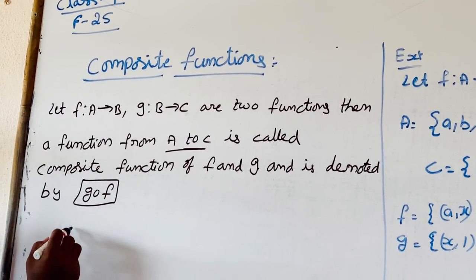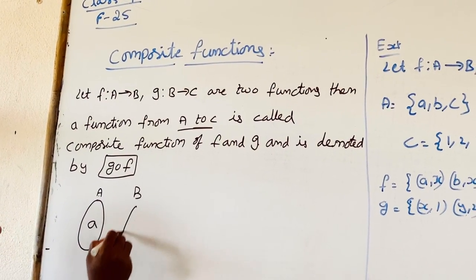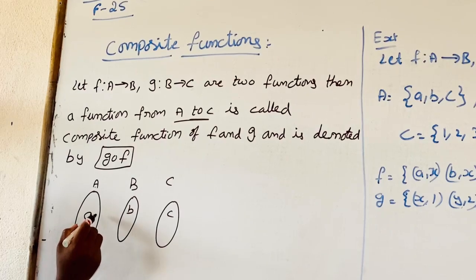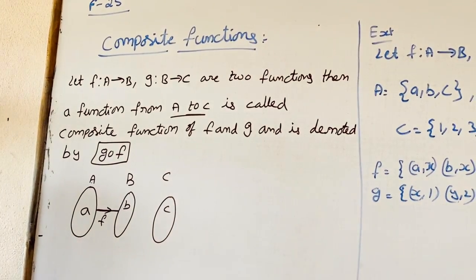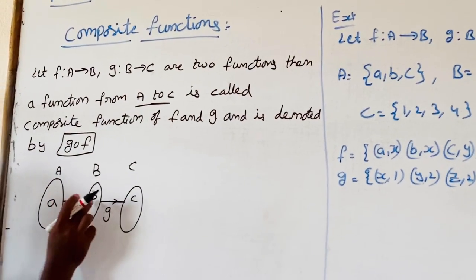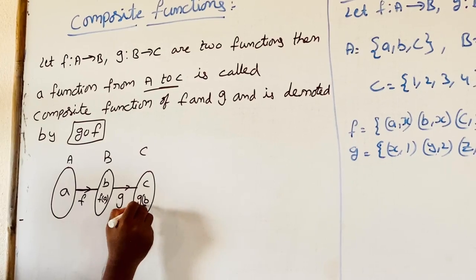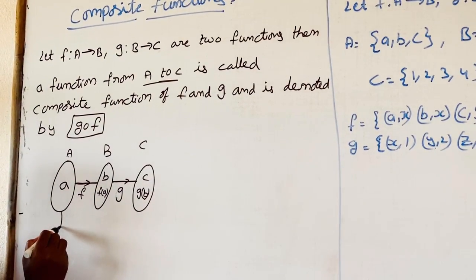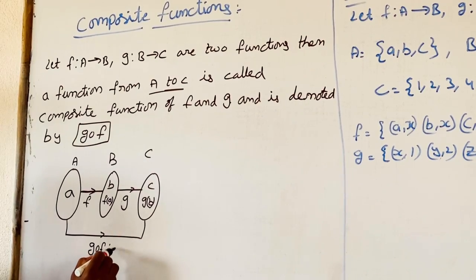Let us see an example. Set A has element a, set B has element b, set C has element c. Function A is related to B — this is function F. In function G, B is related to C. That means G circle F. Here B equals F of A, and C equals G of B. So the image is C. F of A image is B. Then from A to C, G circle F maps A to C.